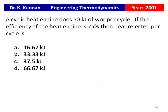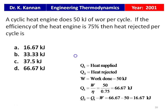From the 2001 question paper: a cyclic heat engine does 50 kJ of work per cycle. If the efficiency is 75%, then the heat rejected per cycle is — options: 16.67, 33.33, 37.5, or 66.67 kJ. Q1 = W / η = 50 / 0.75 = 66.67 kJ. Q2 = Q1 − W = 66.67 − 50 = 16.67 kJ. The answer is 16.67 kJ.